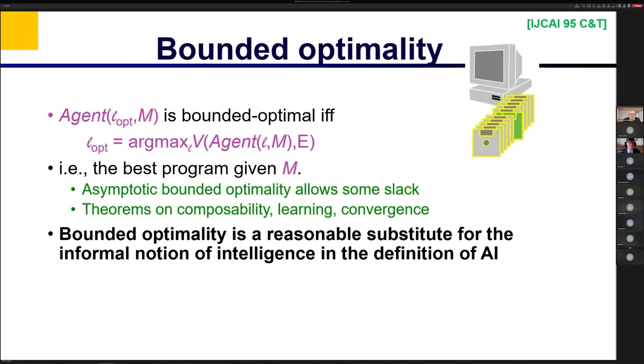We have done it for checkers, so we now have a complete solution for checkers. But for Go, it would take many, many universes of time to solve Go exactly.